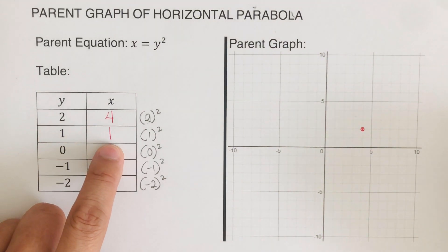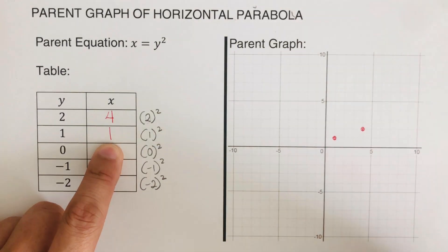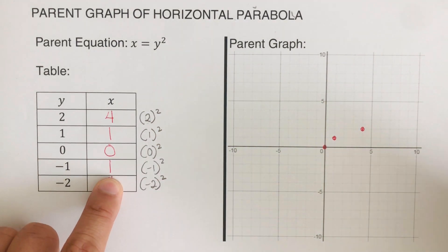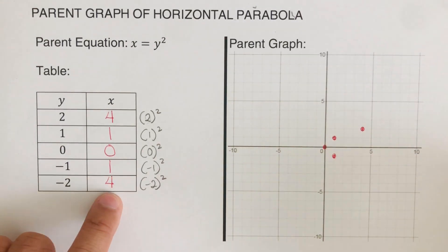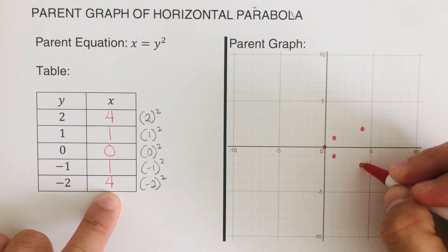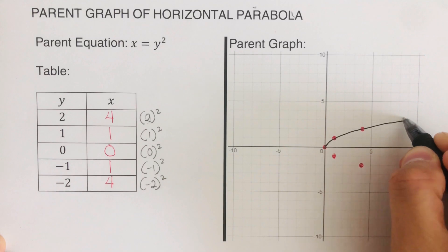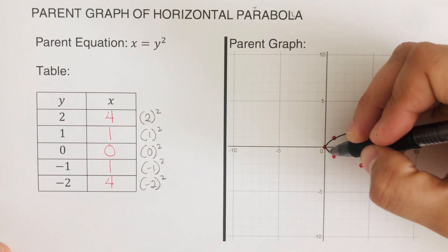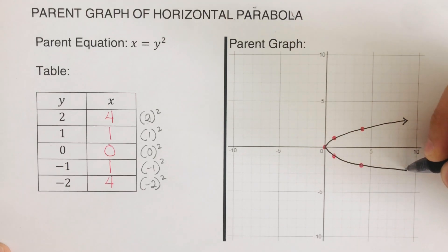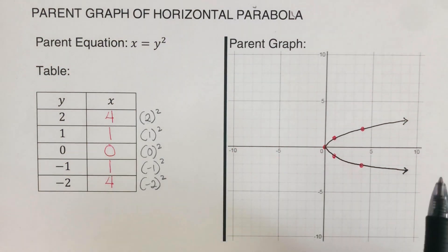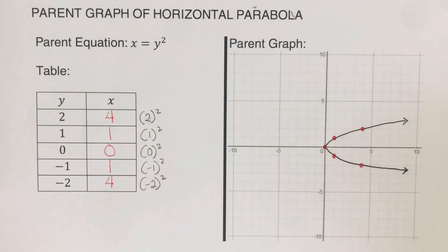The next point is (1, 1), then (0, 0) at the origin, then (1, −1), and (4, −2). Connecting these dots creates the parent graph of a sleeping or horizontal parabola. It's called a sleeping parabola because it's sideways — it opens either right or left.